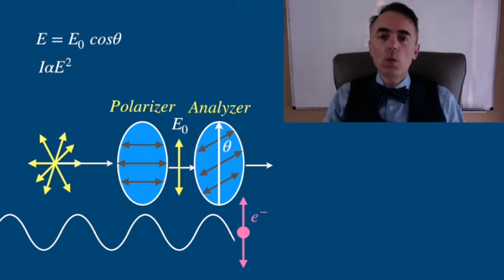The irradiance that will go through the second one will be E0 cosine squared of theta.